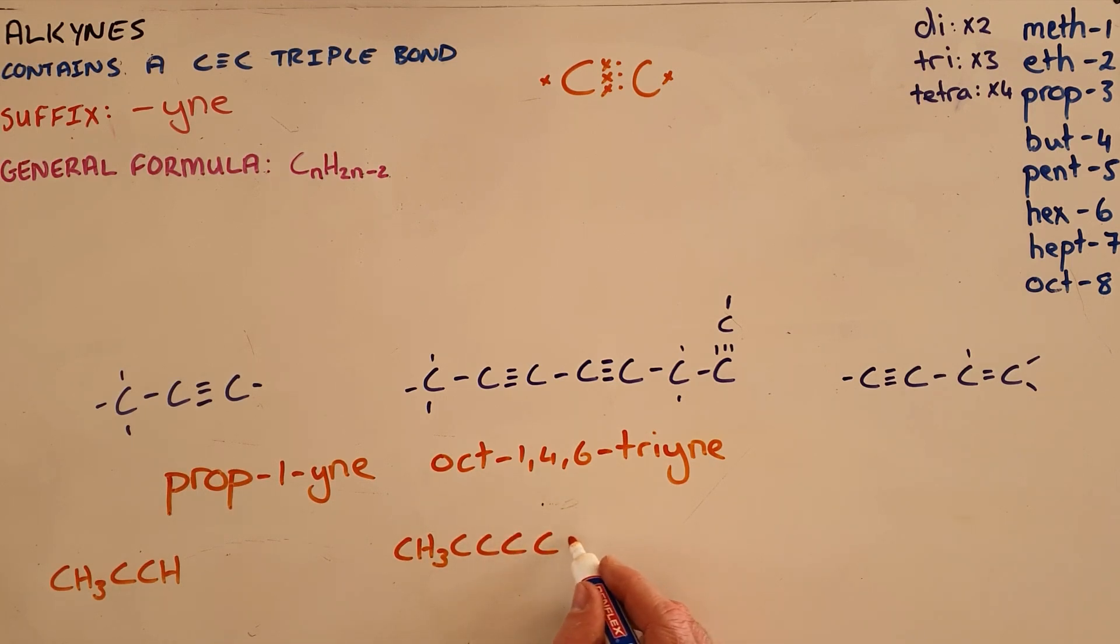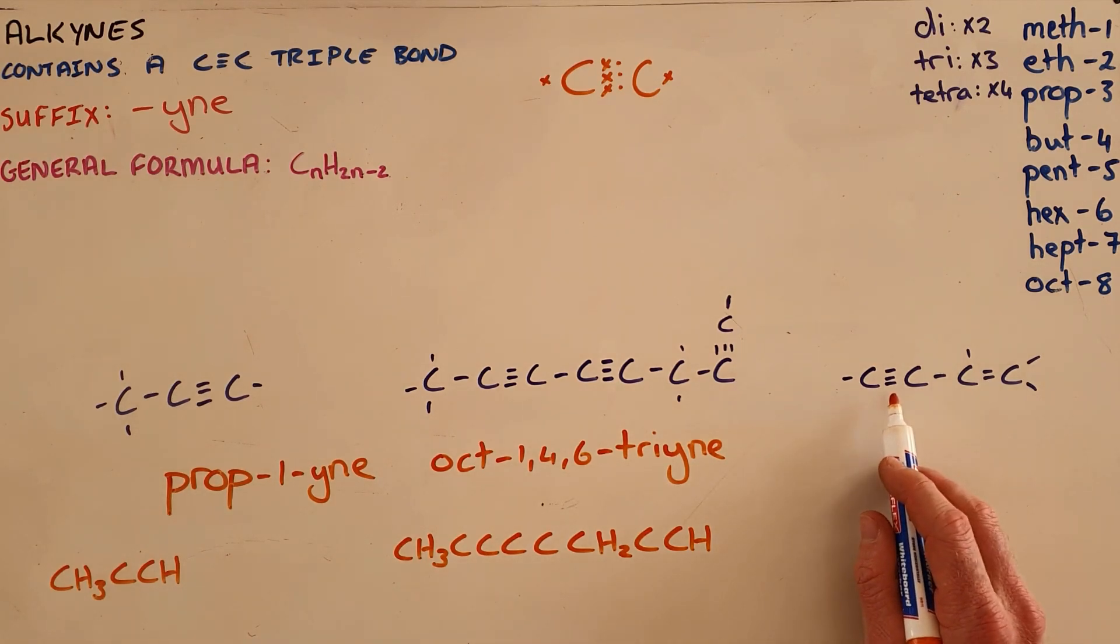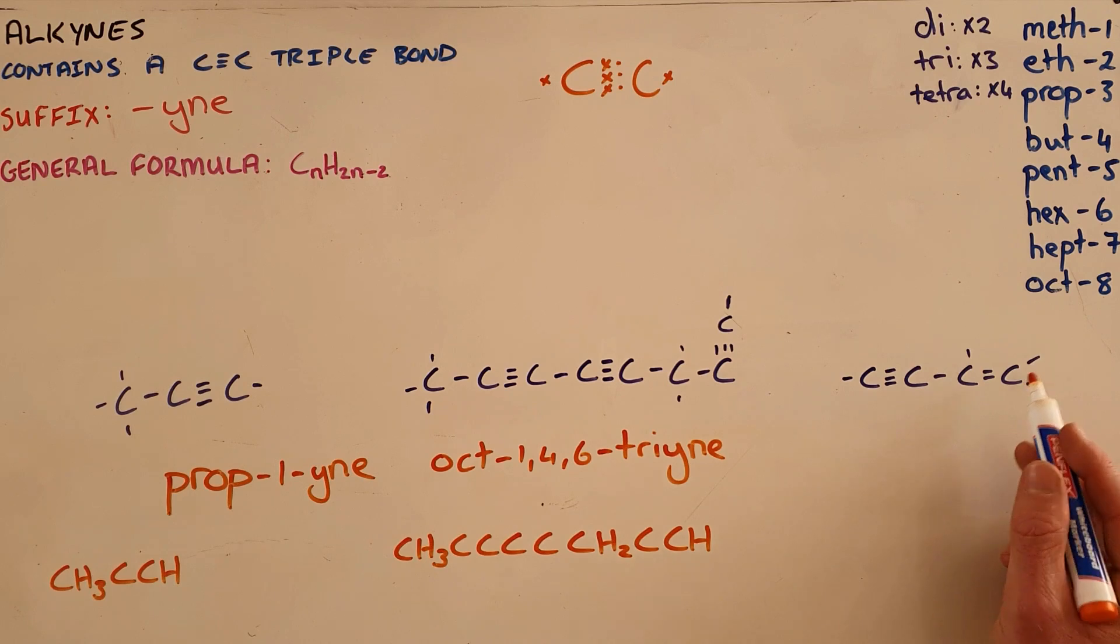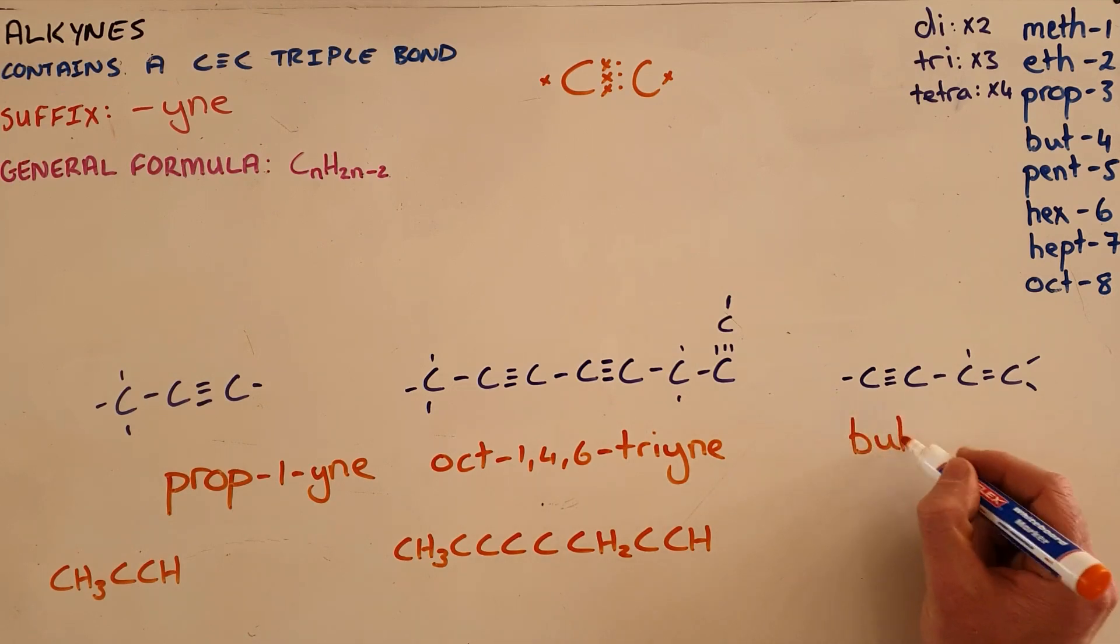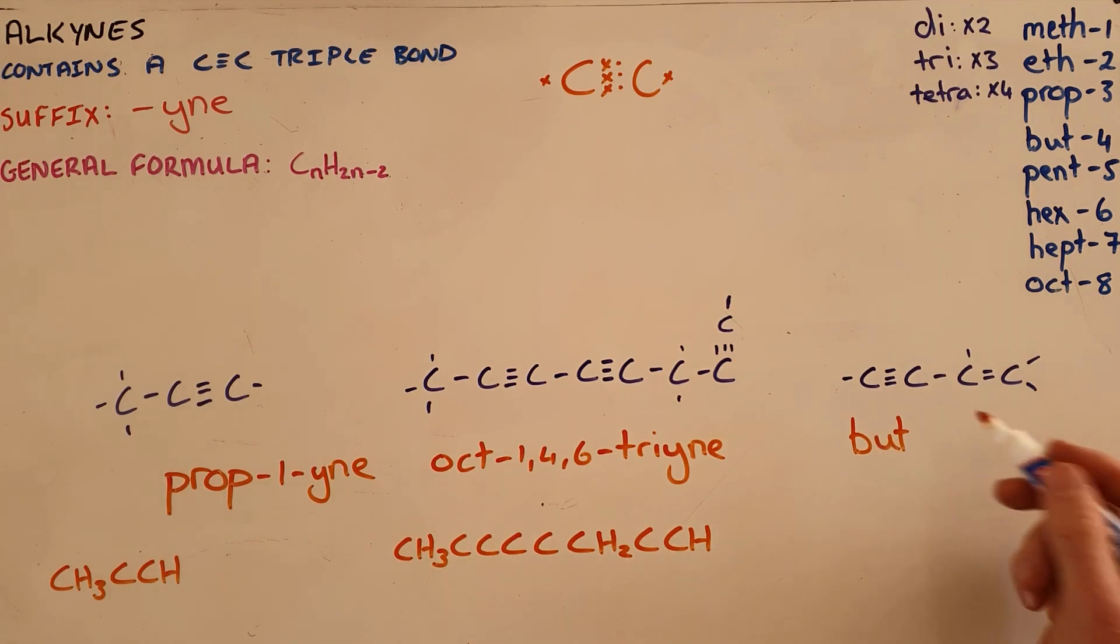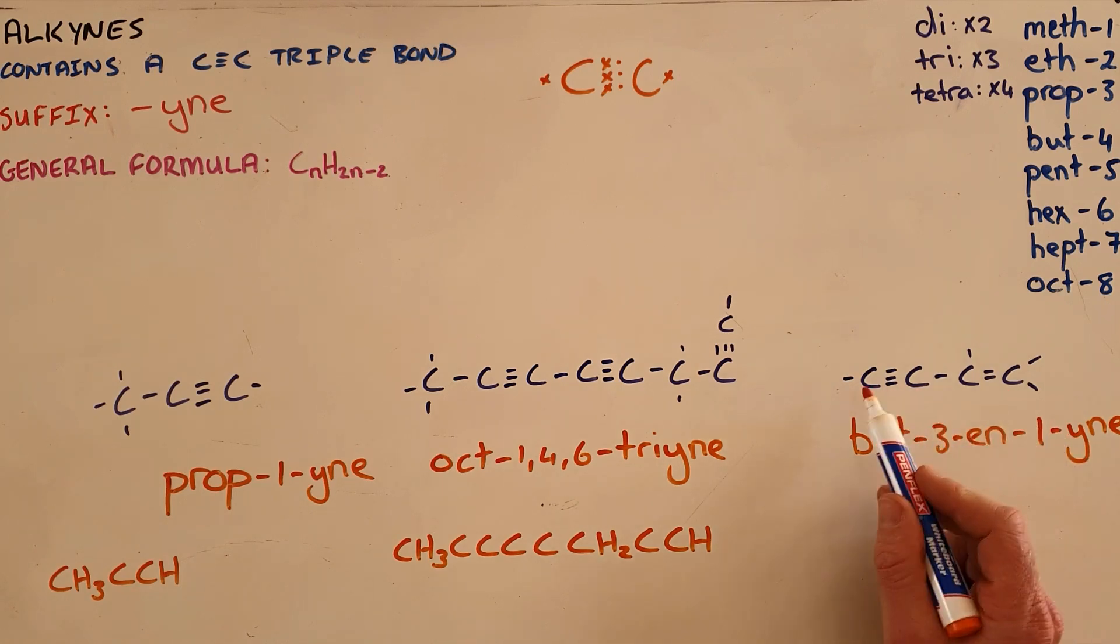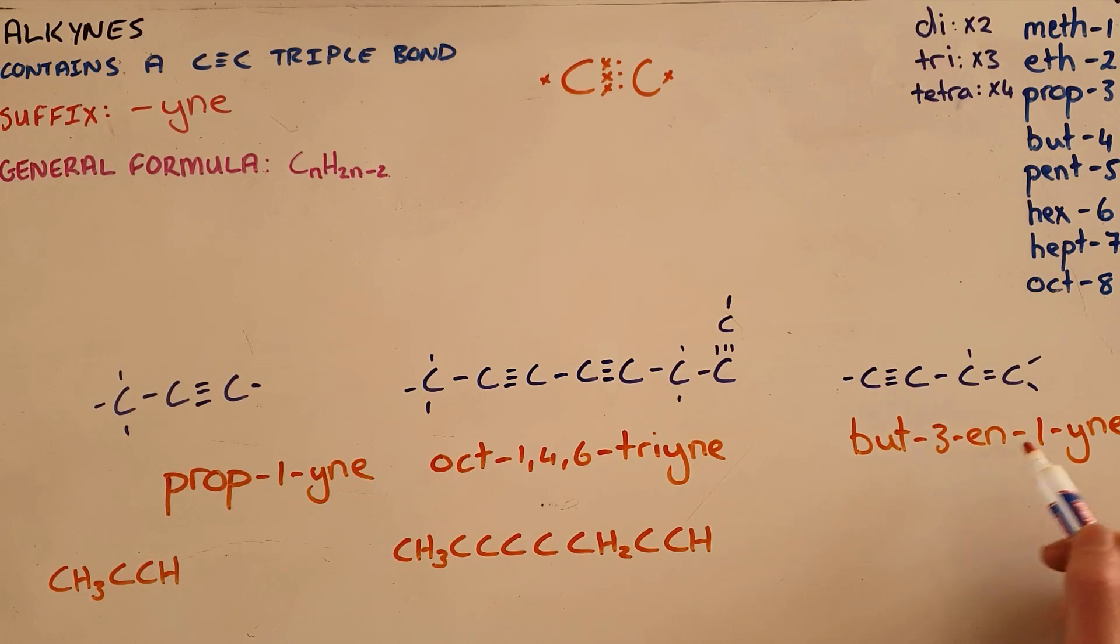And our final example here, we can see that there is a triple bond and a double bond present, which would suggest that this is both an alkyne and an alkene, but the alkyne takes preference over the alkene. So we follow the same numbering pattern: one, two, three, four. This is a but molecule. And what we do to indicate that there is a double and a triple bond is we say that this is but-3-en-1-yne, where we should always number so that the main functional group, in this case the triple bond, has the smallest possible number, which is why we have numbered from the left. And we always show that there is the alkene first and the main functional group comes last.